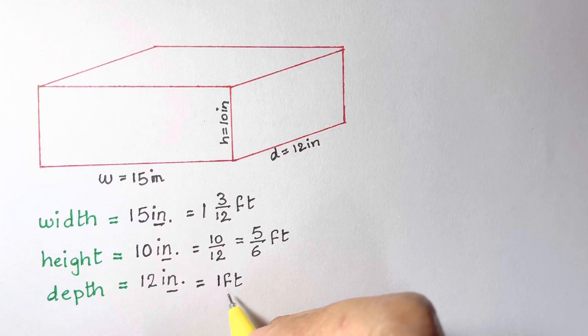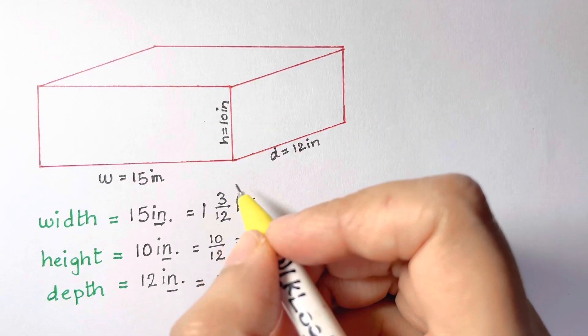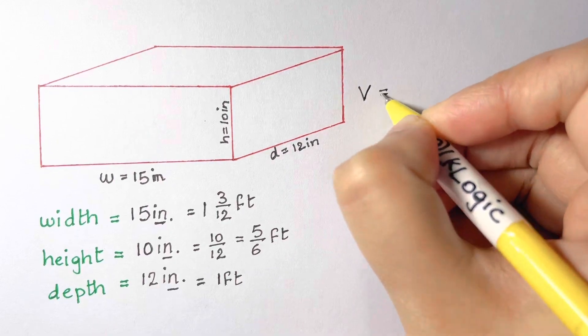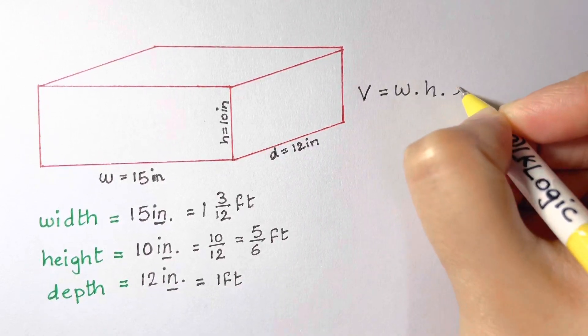When we are calculating the volume of a rectangular prism like this, we multiply width times height times depth.